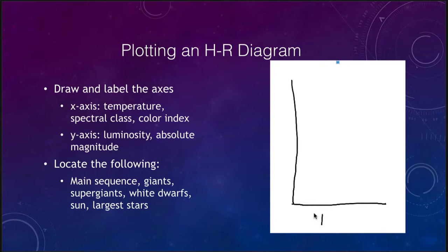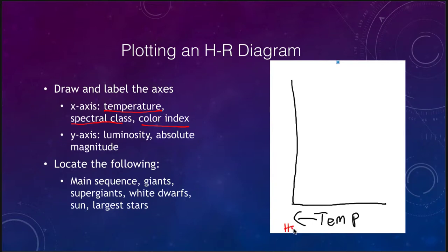On the x-axis we plot temperature. We can measure temperature in various ways — it can be the spectral class, the color index, or the temperature itself. The key thing to note is that when we plot temperature we plot it backwards, so temperature increases to the left, with hot stars over here and cool stars on this side. On the y-axis we plot the luminosity, which increases going upward, with bright stars at the top.